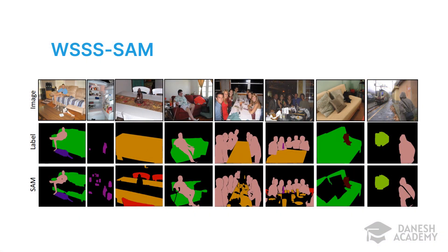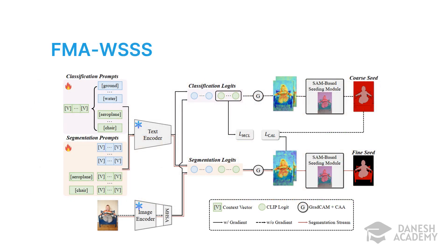To address SAM's lack of labeling, various methods have been developed. One of these is WSS-SAM, whose main idea is to label each mask generated by SAM, using the Grounding DINO model to generate bounding boxes from text prompts. Another model is FMA-WSSS, which also uses SAM to improve the accuracy of generated activation maps and overall increase weakly supervised segmentation precision.